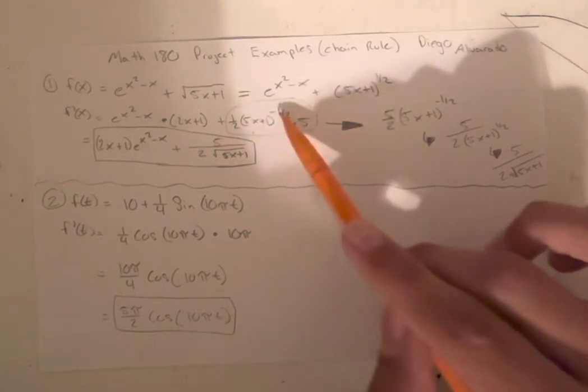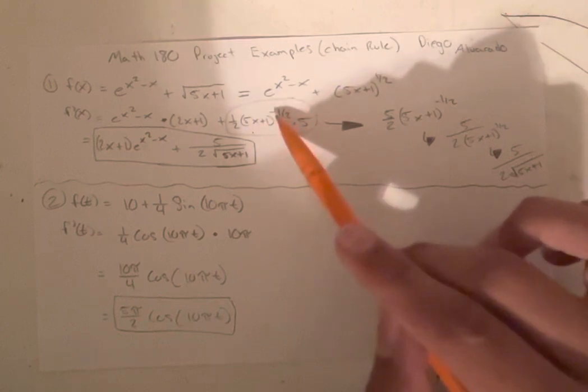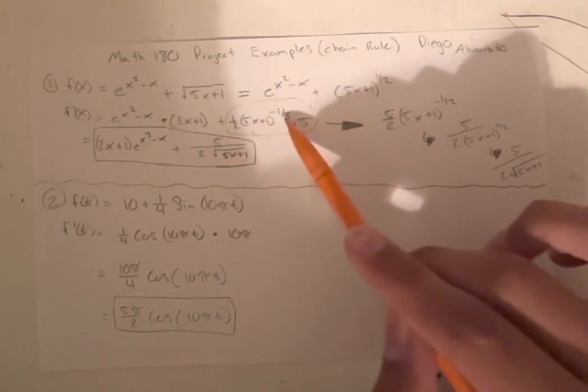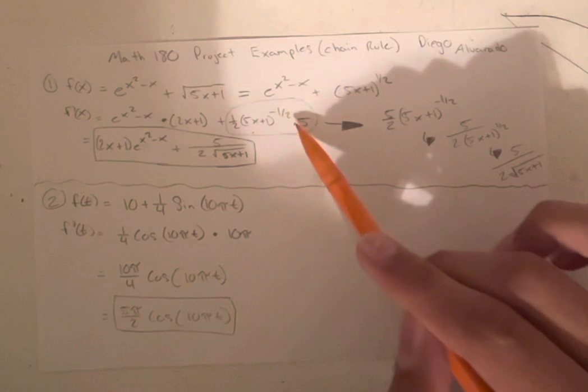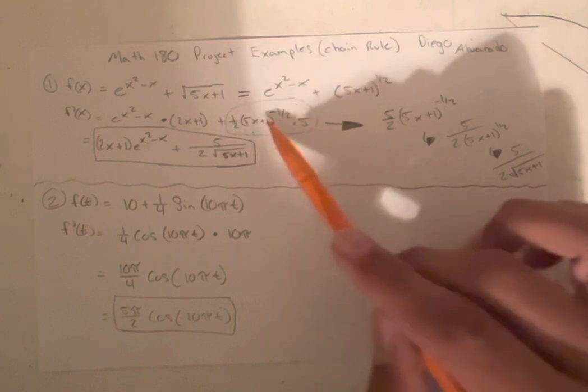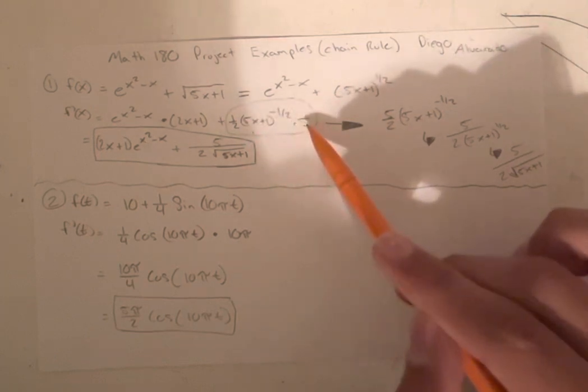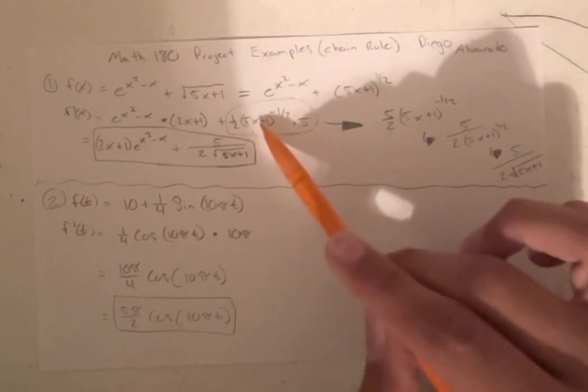Then we subtract it from up here, subtract the one from the previous power, so it gets negative one half. And then once again, you have to multiply times the derivative of the inside. So that's just 5, because the derivative of 5x plus 1 is 5.